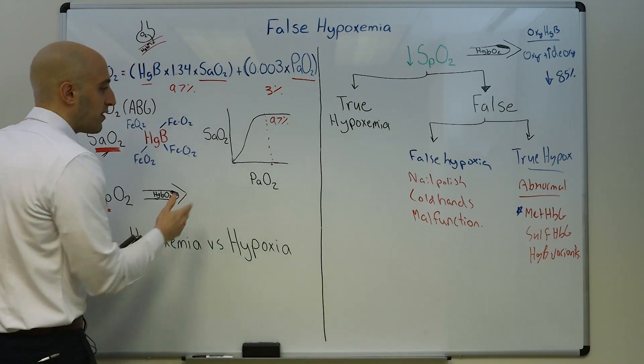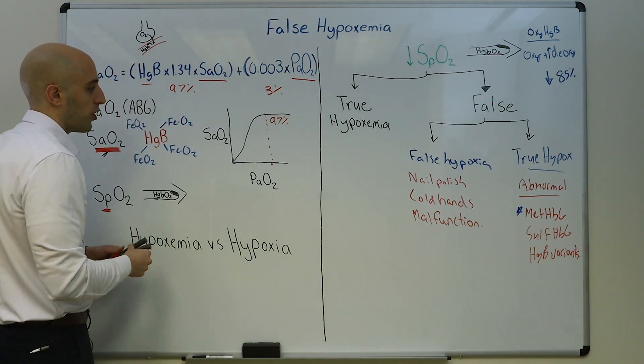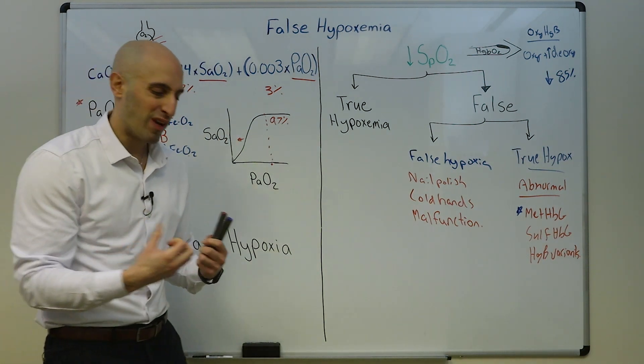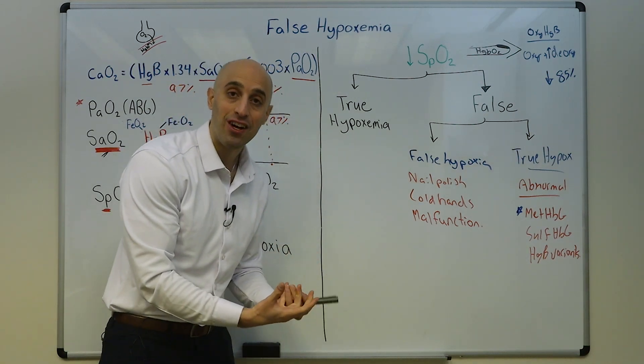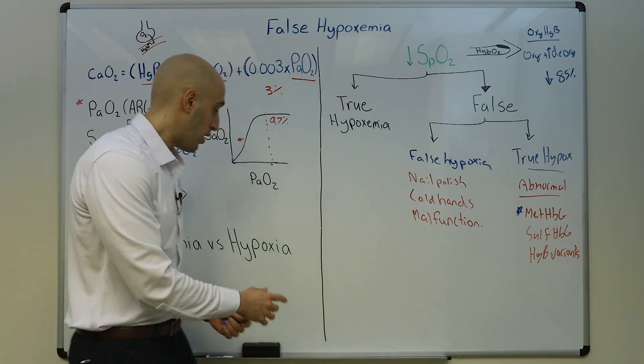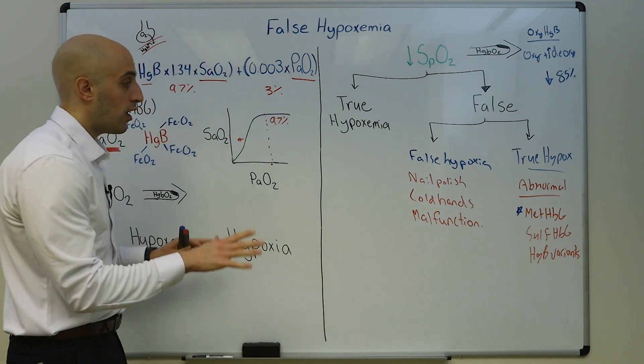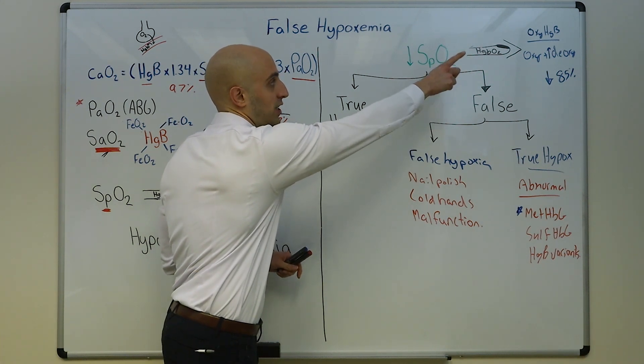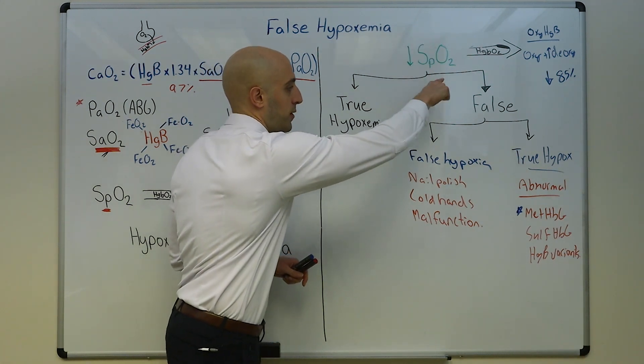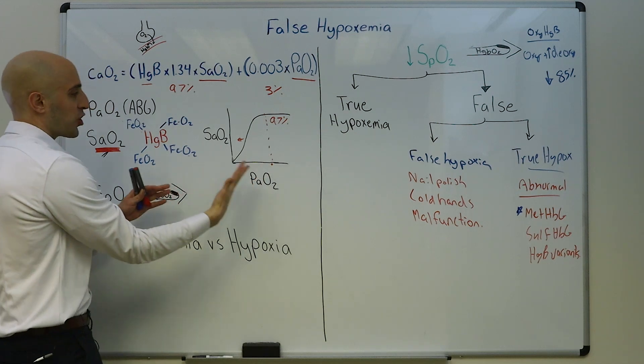How does the methemoglobinemia result in true cellular hypoxia? Well, we have to come back to this oxygen hemoglobin dissociation curve. The methemoglobin is holding on to oxygen tighter, and when it gets to the cell it doesn't release oxygen to the cell, resulting in cellular hypoxia.